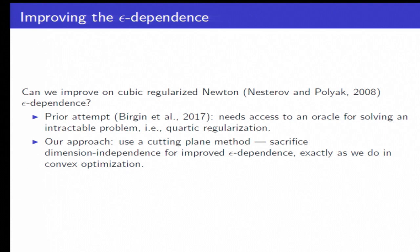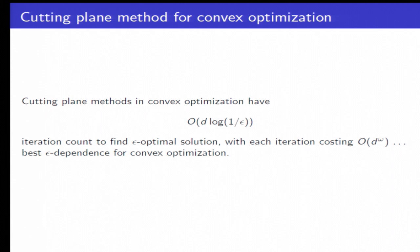So let's just recall what happens with a cutting plane method in convex optimization. In convex optimization, our algorithm, our cutting plane method has a D log 1 over epsilon iteration count, at least if we're using a center of gravity, to find an epsilon optimal solution. And now each iteration, of course, requires essentially solving a linear system. And this is the best epsilon dependence for convex optimization.